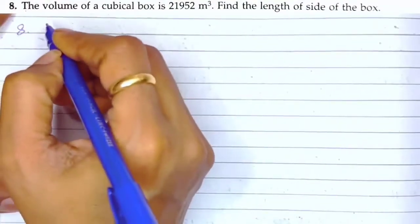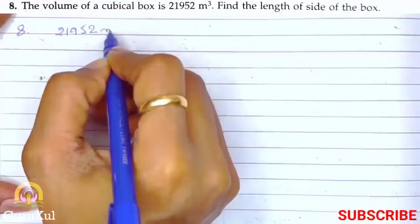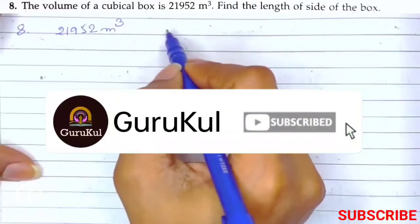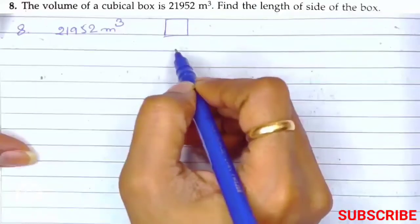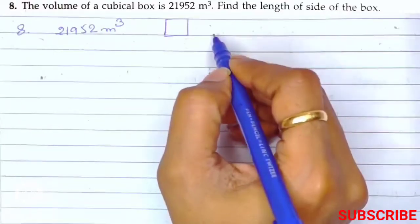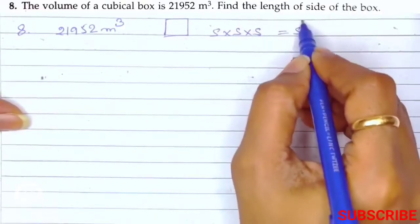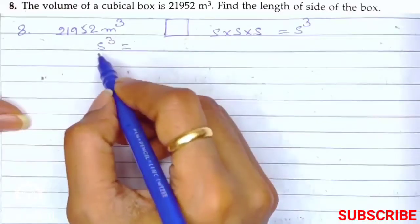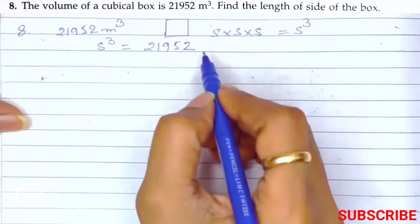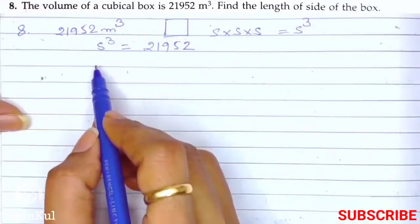Question number 8: The volume of a cubical box is 21952 meter cube and we need to find the length of the side of the box. In a cube, all 3 sides are equal, like a dice. So volume is side × side × side, that is s cubed. Here s cubed equals 21952. We have to find the measurement of one individual side.